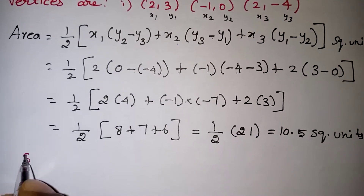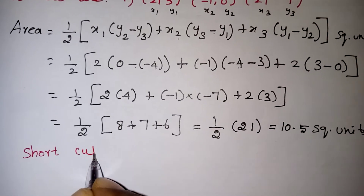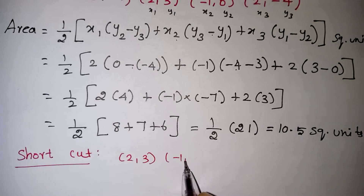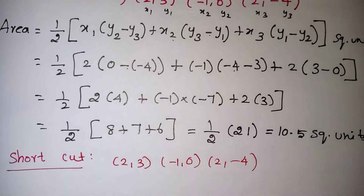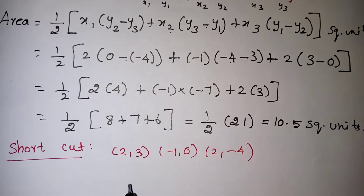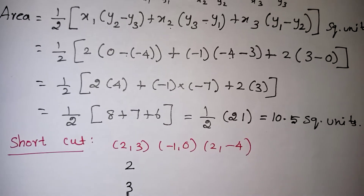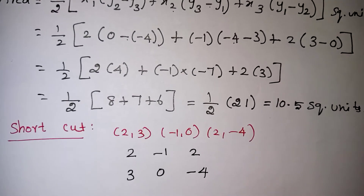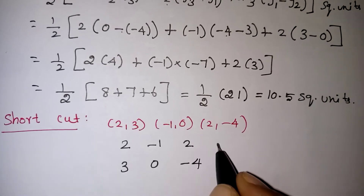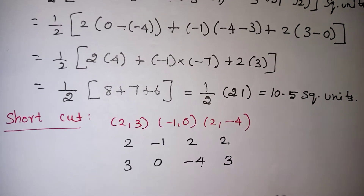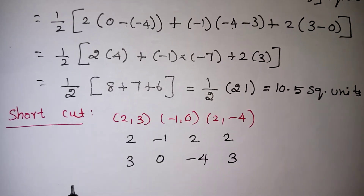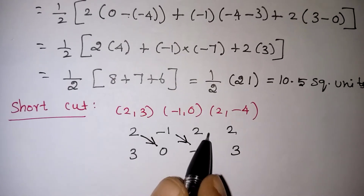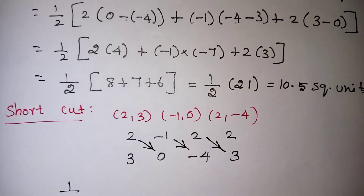Now the shortcut method — very easy and interesting, and you can also apply this in your exam. Our question has vertices (2, 3), (-1, 0), and (2, -4). Arrange them in a column: write 2, 3 then -1, 0 then 2, -4, and repeat the first point (2, 3) at the end. Then draw arrow marks going diagonally, first in the forward direction and then in the reverse direction.